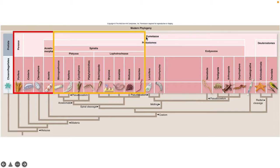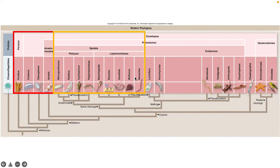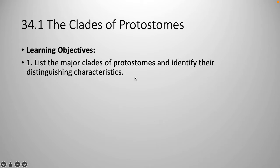Just to give you an idea of where we were and where we're going — we just wrapped up our radial symmetry and asymmetrical animals. Now we're tackling the protostomes and we're going to focus on Spiralia. So we have Platozoans and the Lophotrochozoans. We won't talk about Micrognathozoa and the Cycliophora, but we will discuss the other ones.